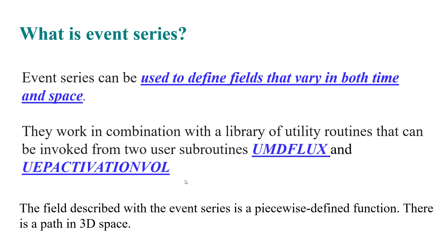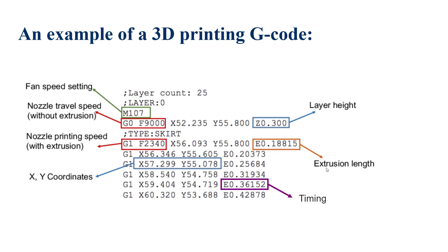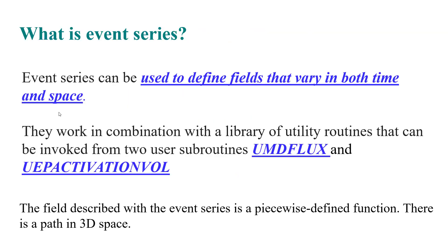The important point is: what is event series, and why is it important to convert G-code to event series? Event series can be used to define fields that vary in both time and space. In this G-code, as the time changes, the location changes too. In this state, we should convert G-code to event series.